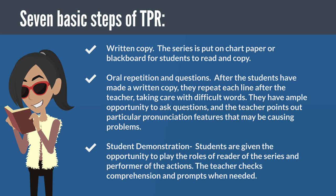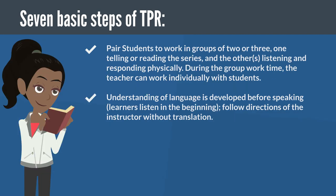Step 6 — Student Demonstration: Students are given the opportunity to play the roles of reader of the series and performer of the actions. The teacher checks comprehension and prompts when needed. Step 7 — Pair students to work in groups of two or three, one telling or reading the series and the others listening and responding physically. During group work time, the teacher can work individually with students.